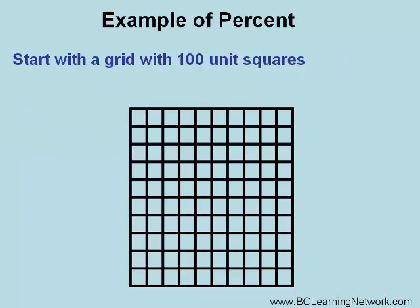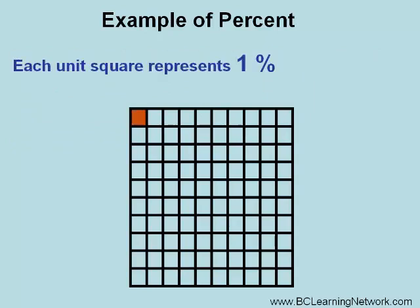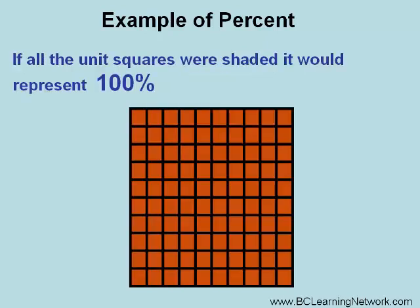So we'll start with a grid containing one hundred unit squares. When we shade in one of these unit squares, that would represent one out of a hundred, or one percent. If we shaded in all of the unit squares, this would represent one hundred out of a hundred, or a hundred percent.